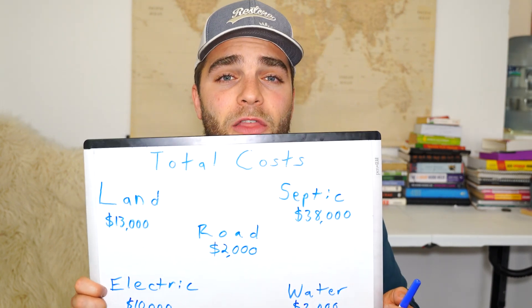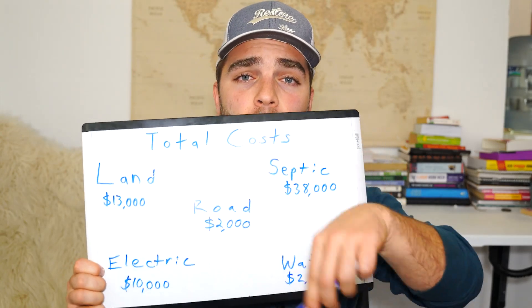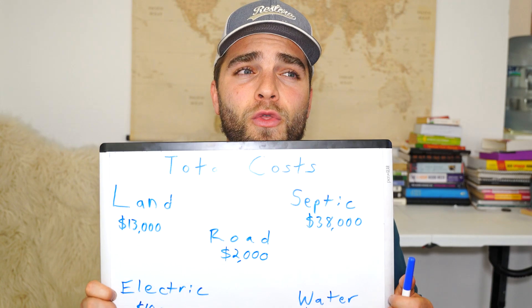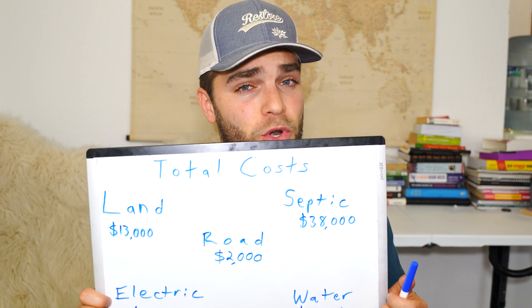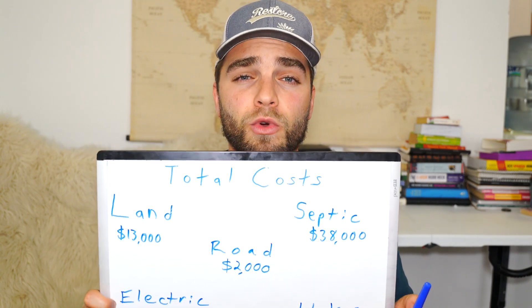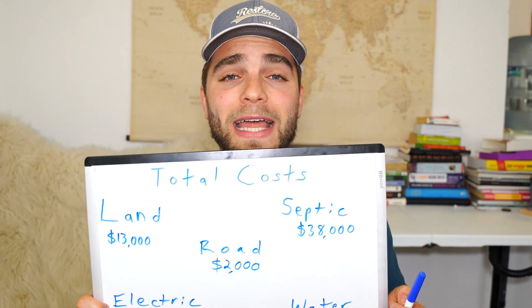All in all, this whole process to get the RV park up and started from nothing cost about $65,000, which is pretty good. We now have 14 renters and are bringing in about $7,700 a month. I just wanted to break down the basics of infrastructure so you can get an idea if you're starting one. If you want to see how much an RV park makes in more detail, watch the video linked here. Thanks so much for watching — subscribe if you want to see more RV park videos, and comment any questions below.